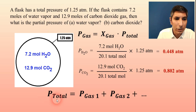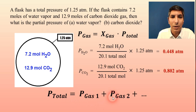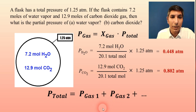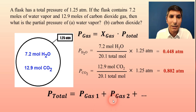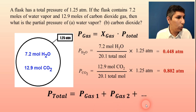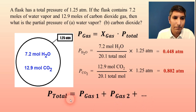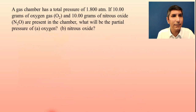The total pressure should always be equal to the sum of the individual partial pressures. If you take 0.448 atmospheres and add 0.802 atmospheres, that gives you the total of 1.25 atmospheres — that's how we check our work. In this case we only have two gases, but other gas mixtures might have three or four or more. Now let's take a look at another example.